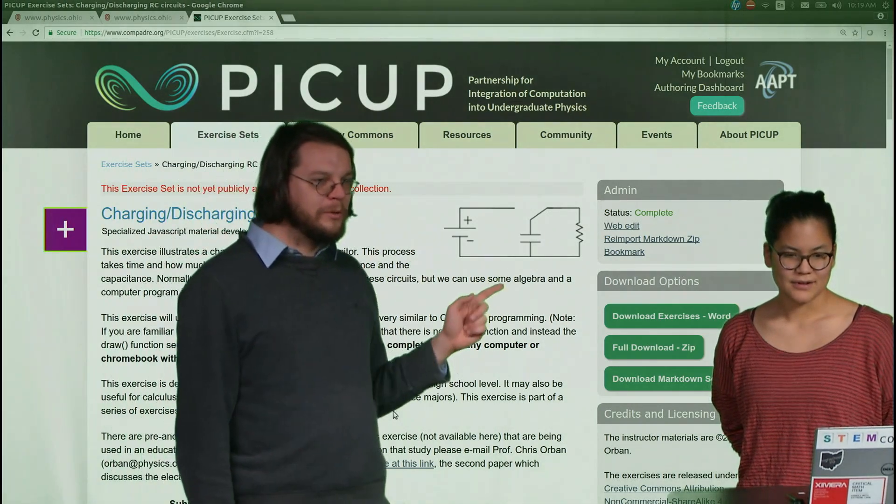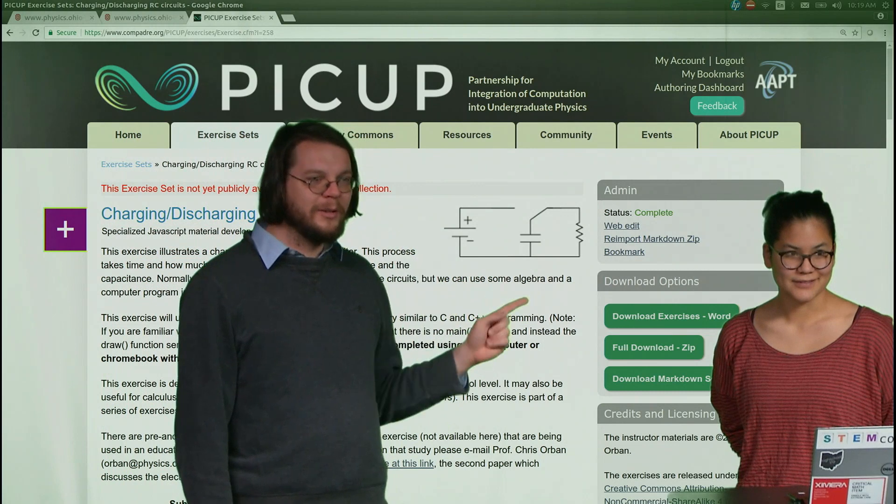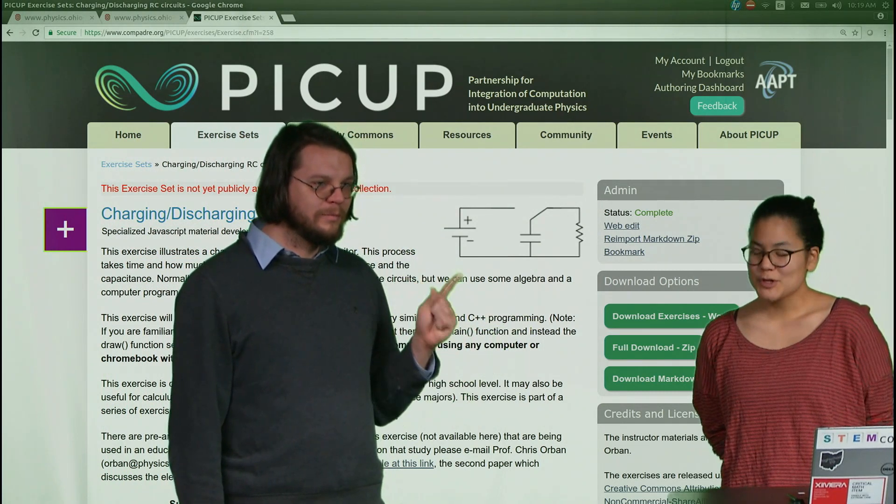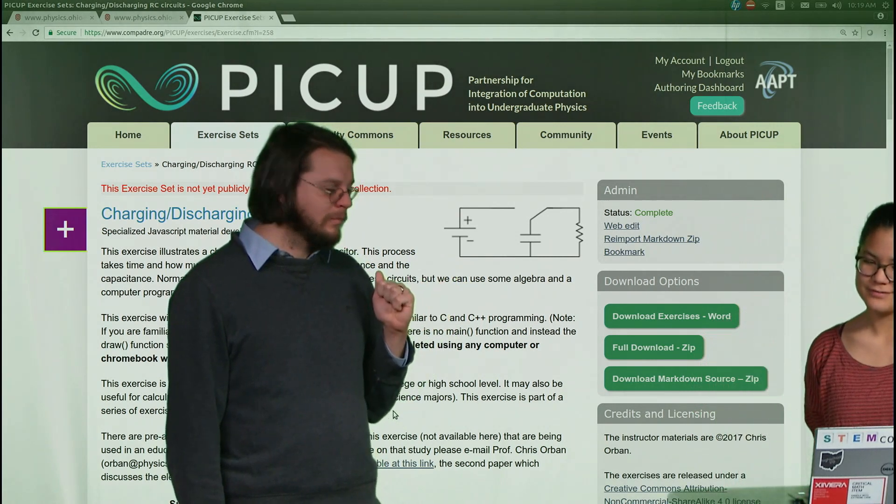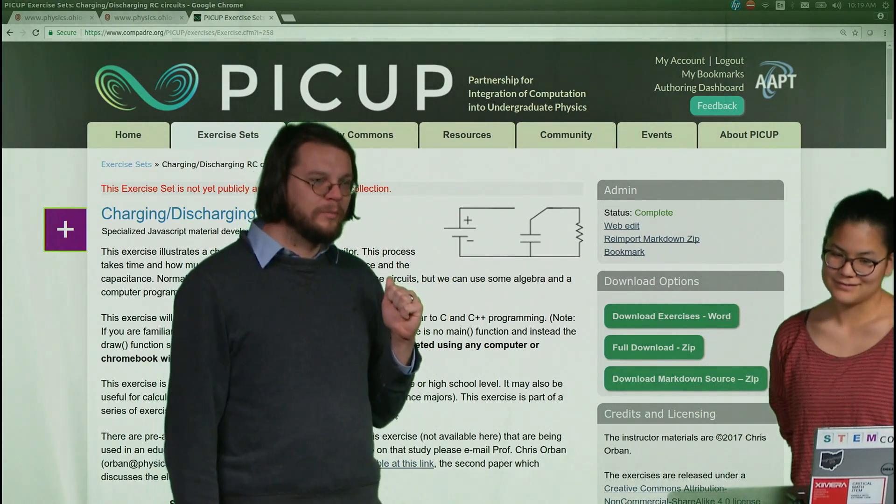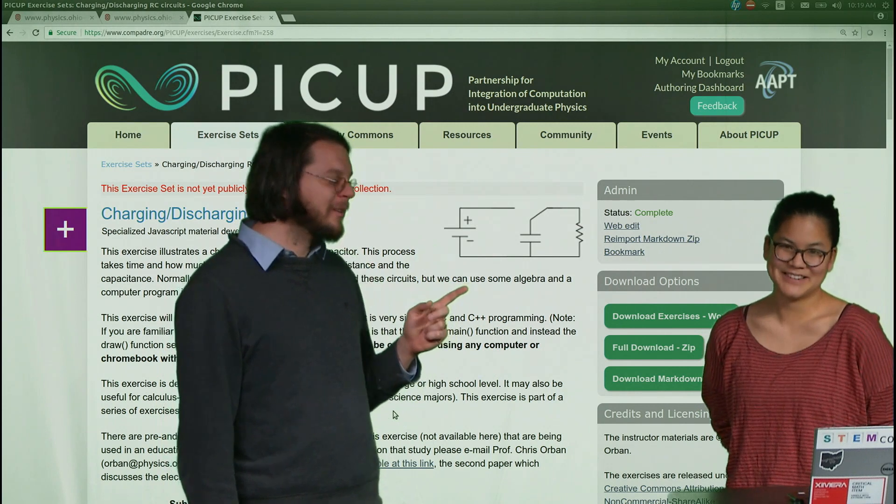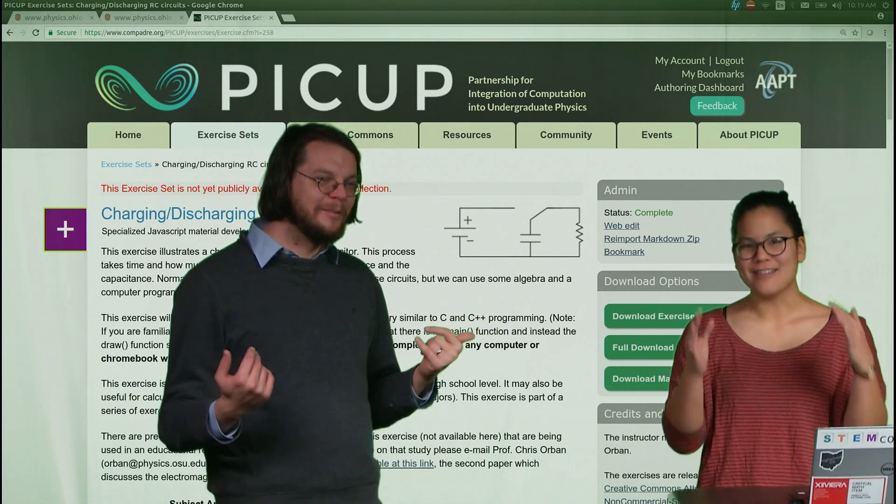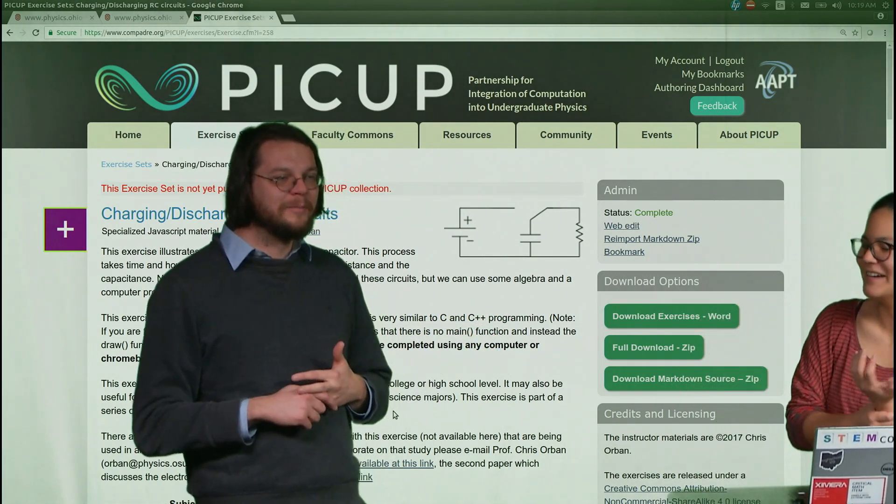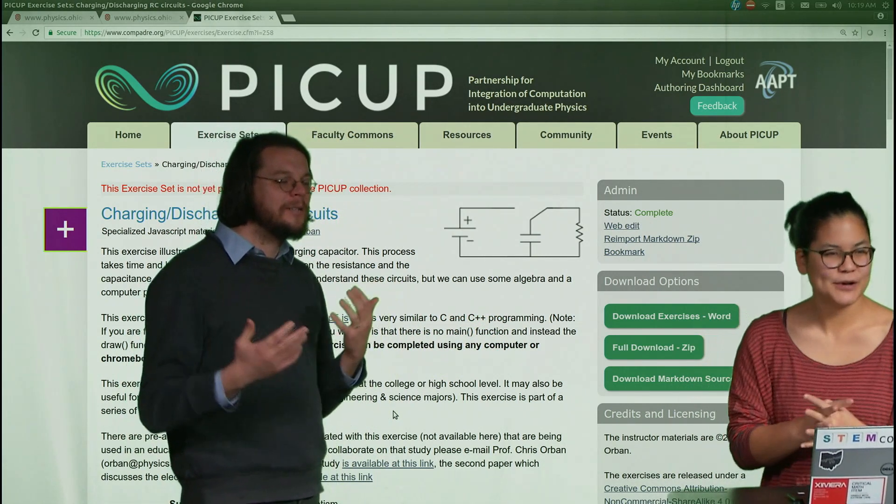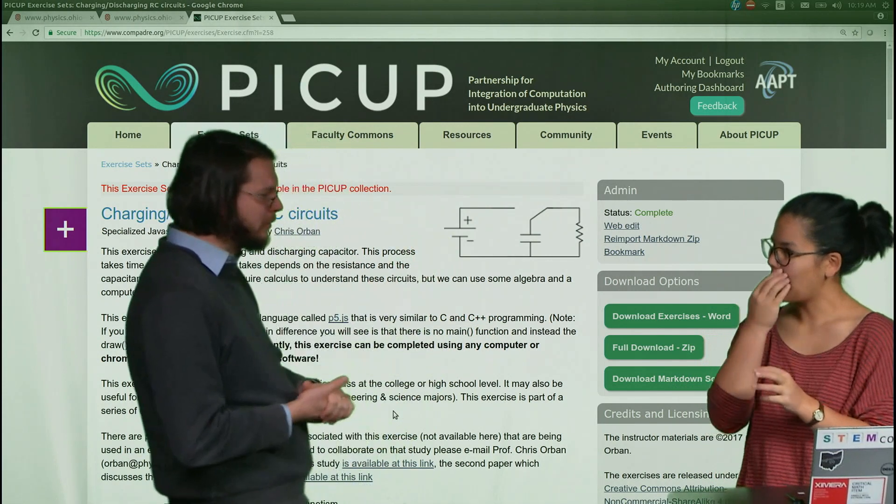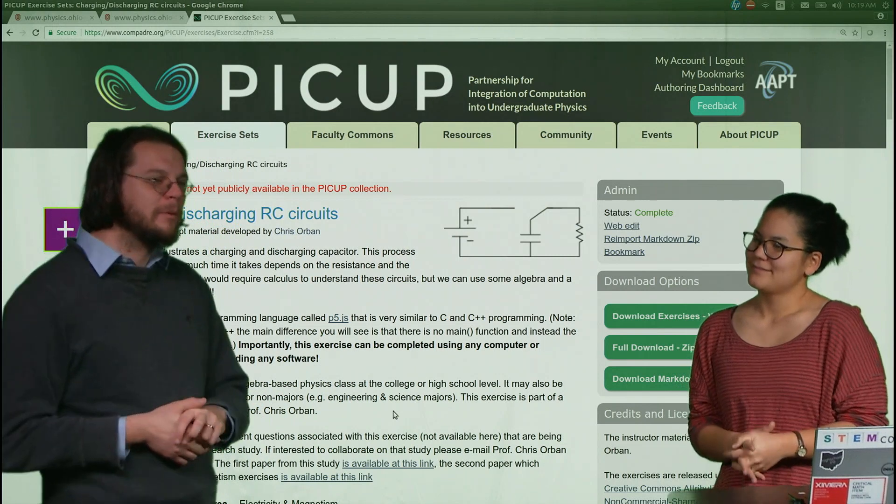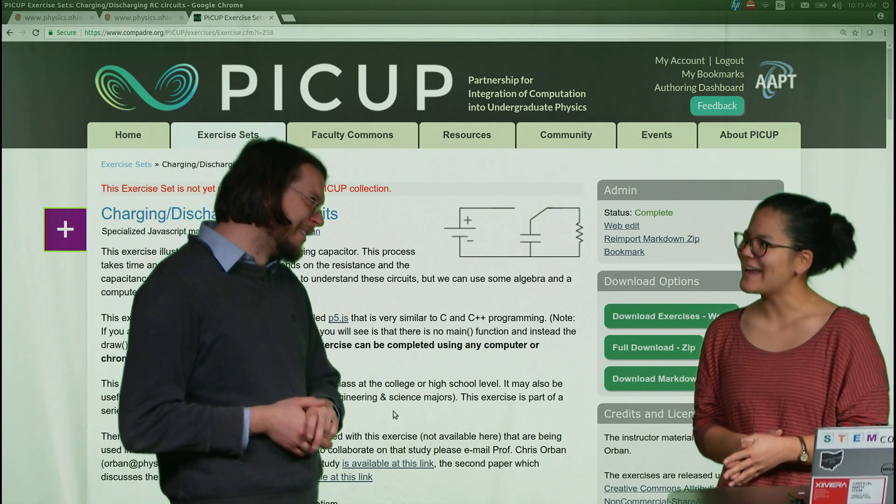What's the special thing about this coding activity Blythe that makes it different from all the other coding activities we've done so far? Well there's a picture of a circuit there which I don't think we've seen before. That's right. Do you do much electronics in what you do? No, I mean I work on computers. I rely on this technology.